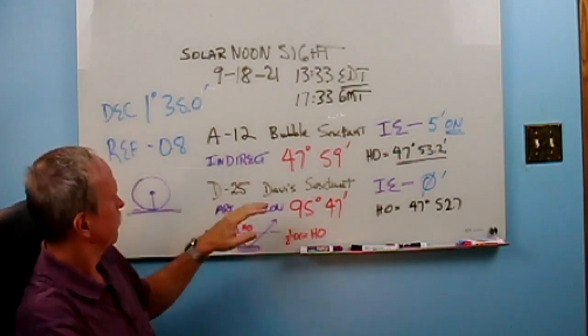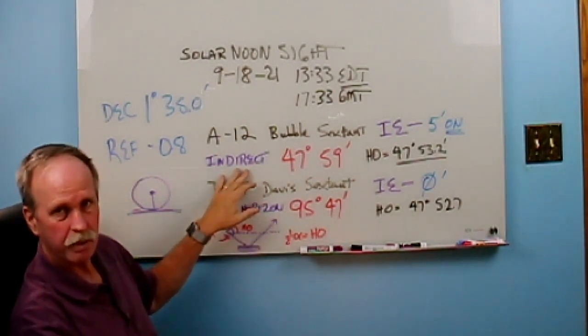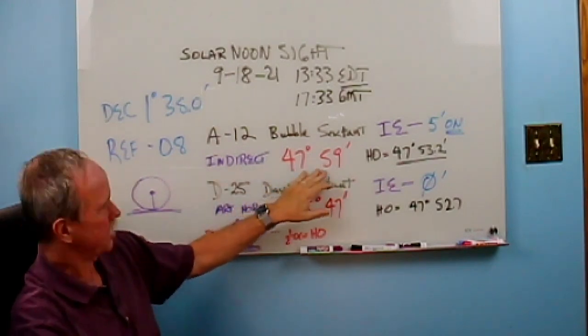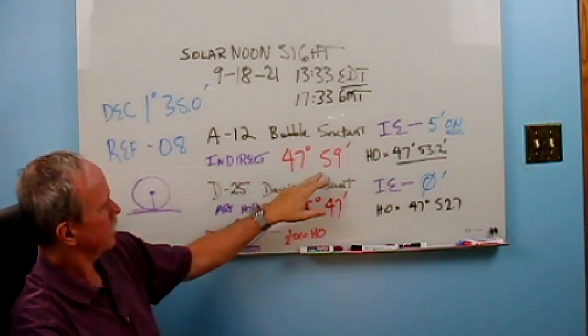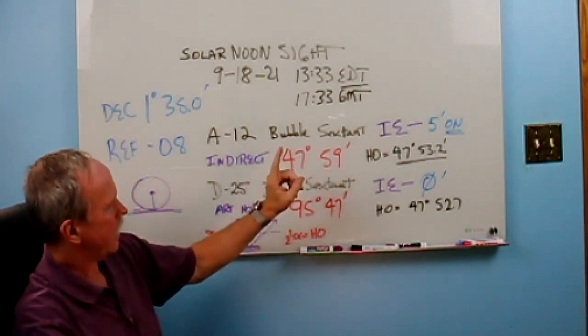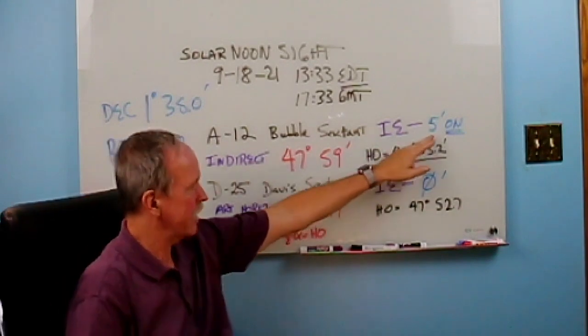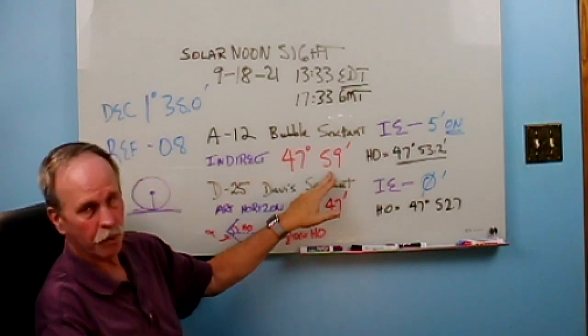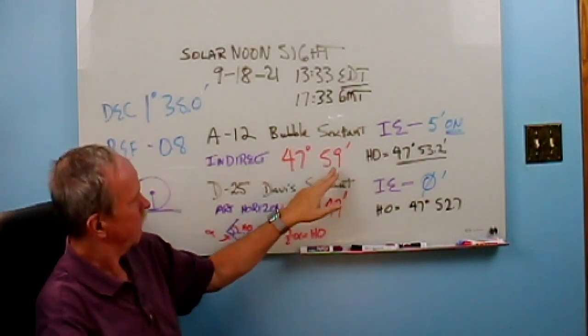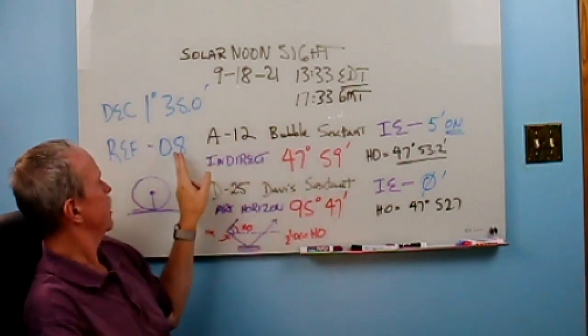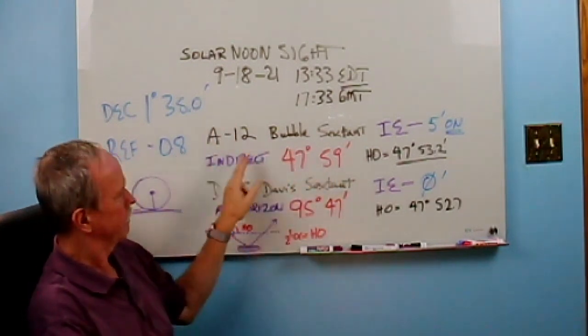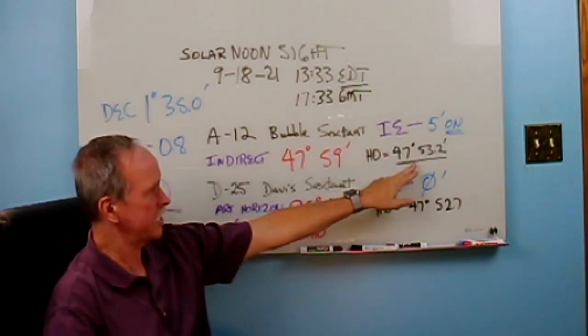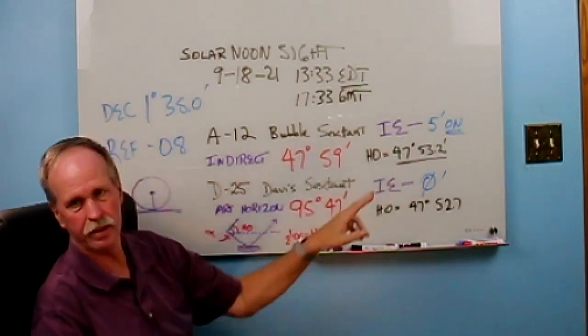Let's start off with the easy one. We'll start with the indirect reading from the A12 bubble sextant. This is our raw reading, this is HS. 47 degrees, 59 minutes. From that, we have to subtract our index error of 5 minutes. That brings us down to 47 degrees, 54 minutes. Then we need to subtract our refraction, and that brings us to 47 degrees, 53.2 minutes. And that is our final corrected reading.